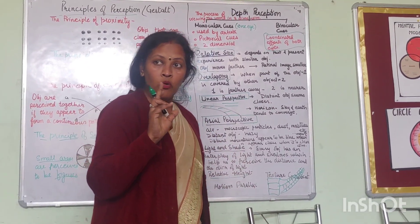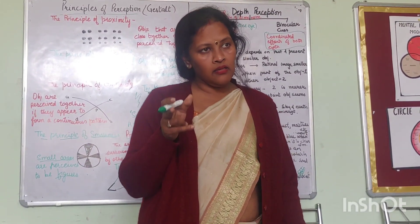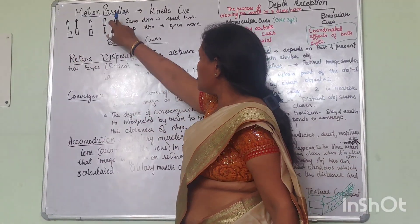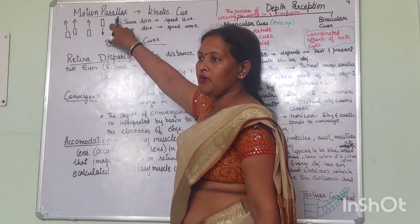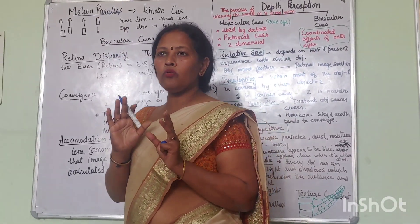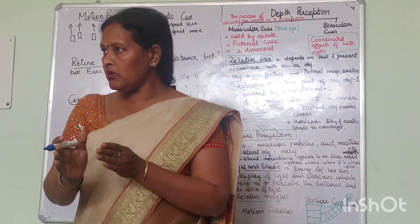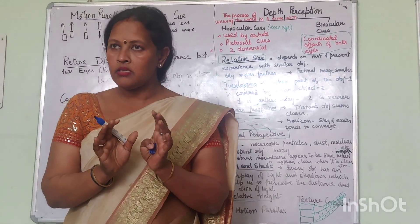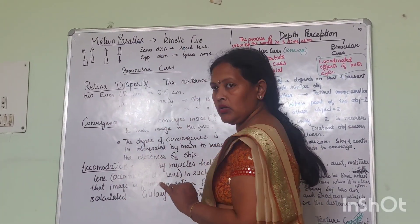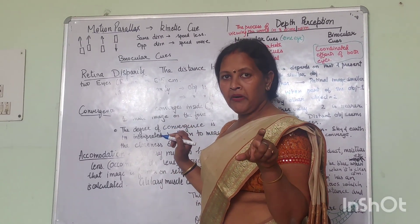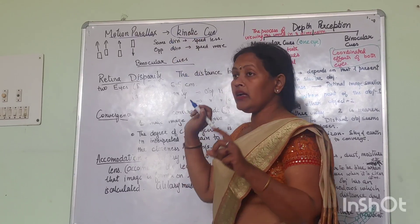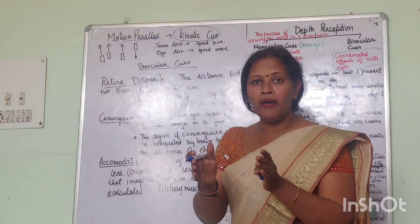In my next class we will cover binocular clues. Motion parallax is also a monocular clue, but it is not considered a pictorial clue because it involves motion — you cannot capture it in a picture. So it belongs to the kinetic clue category, which arises because of movement.